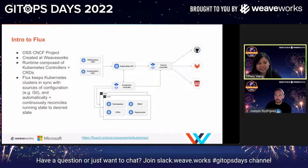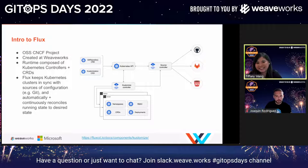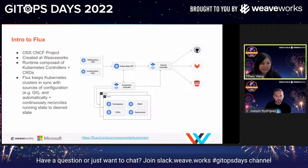We're also going to be using the kustomize controller. The kustomize controller is one of Flux's reconciler controllers, and it interacts with a Kustomization CRD. The Flux Kustomization allows Flux to know the path within the specified source — in our case, a Git repository — from which Flux should read and reconcile the resources included in that specific path. As its name implies, you can certainly use Kustomize, which is a configuration customization tool that has been native to Kubernetes as of 1.14. The kustomize controller also interacts with plain Kubernetes manifests and can effectively reconcile all Kubernetes manifests.